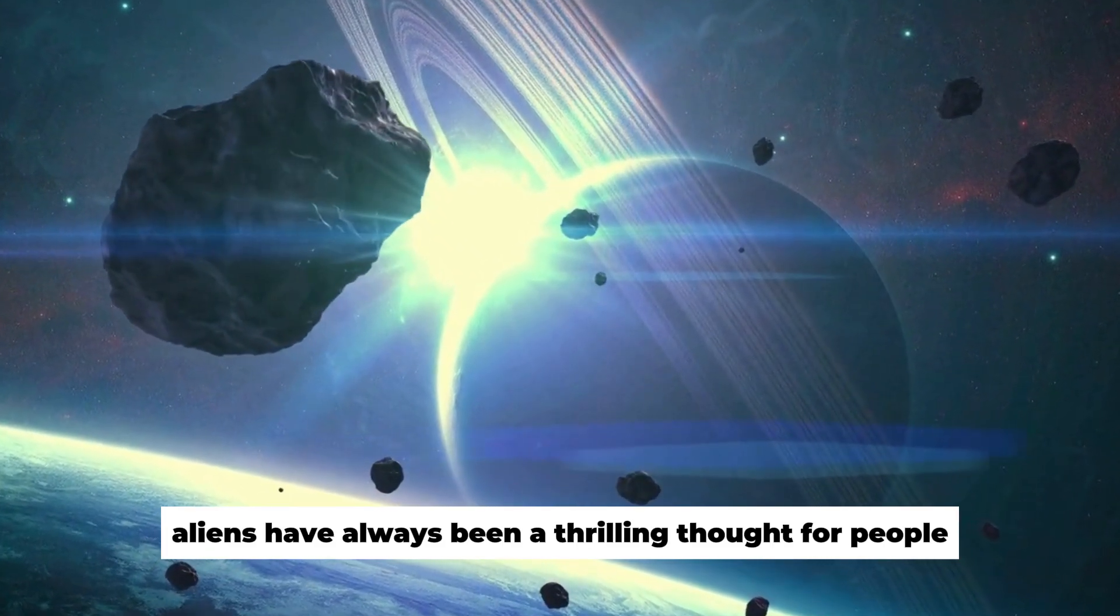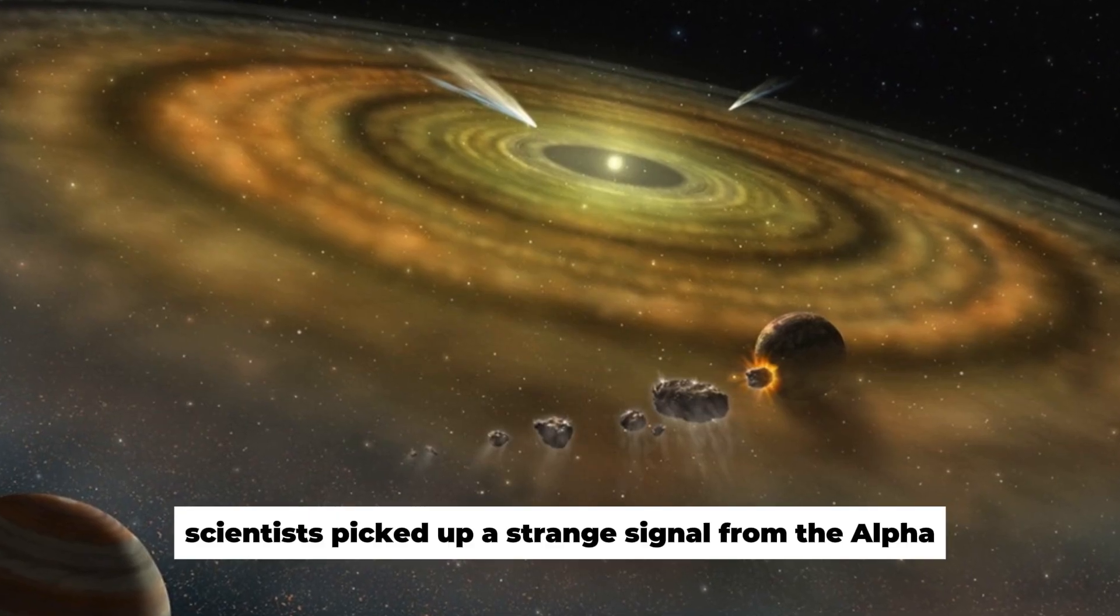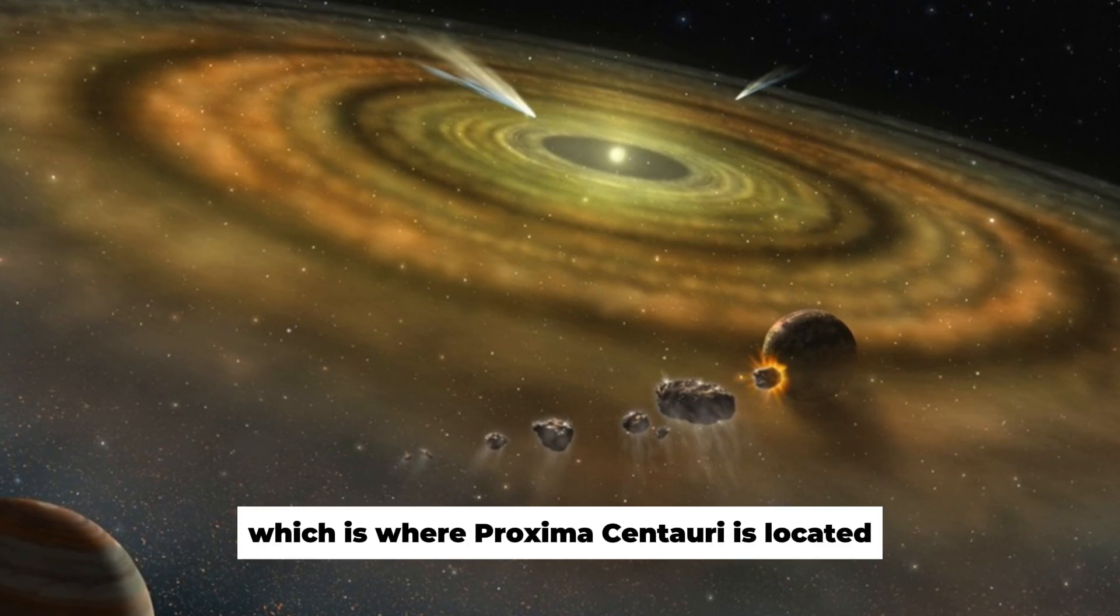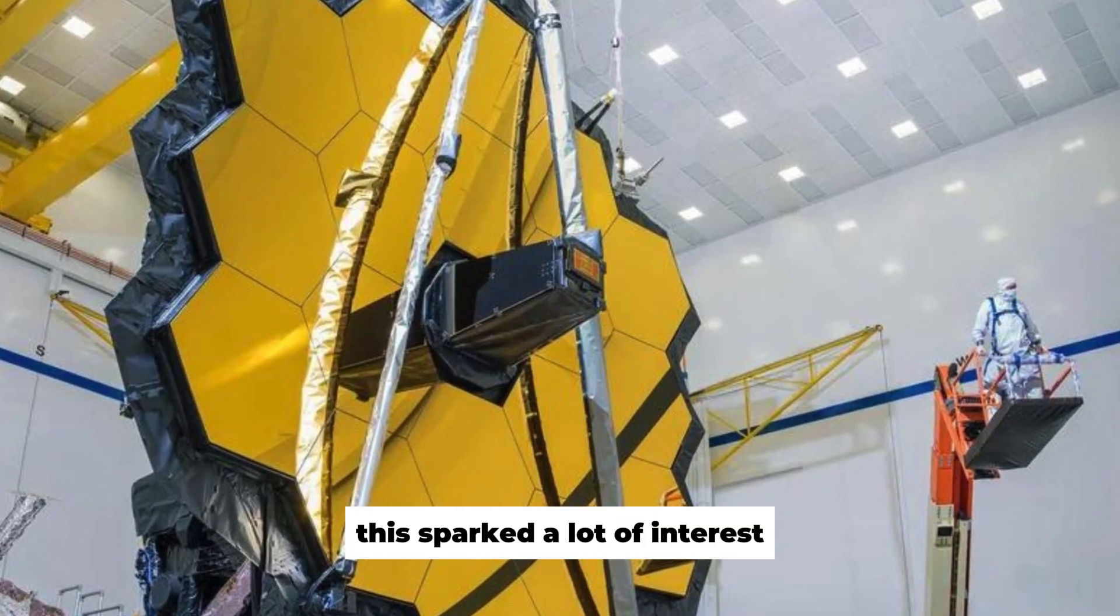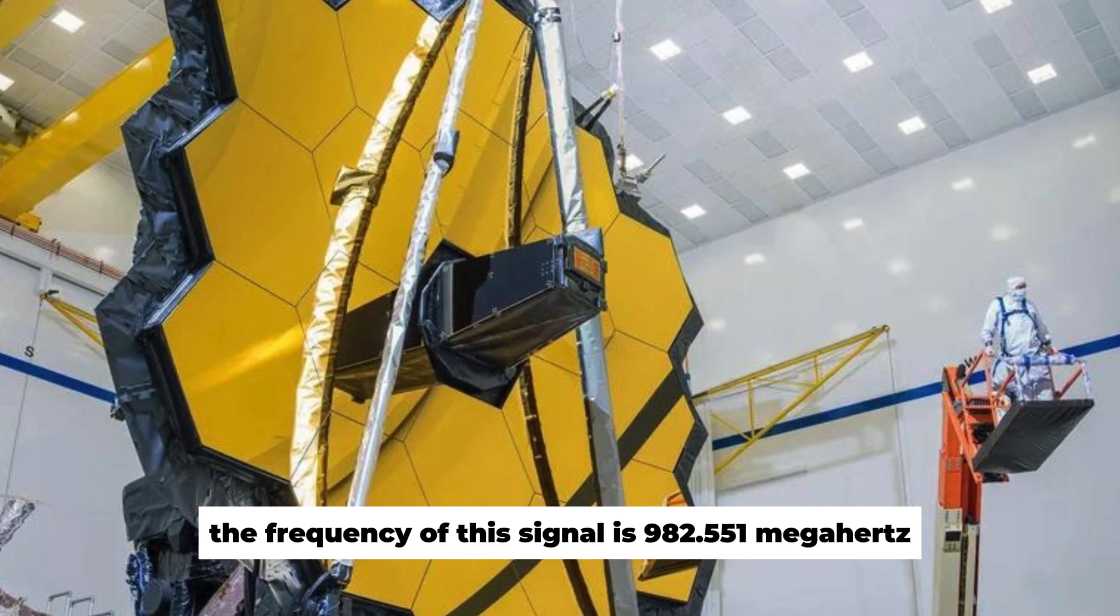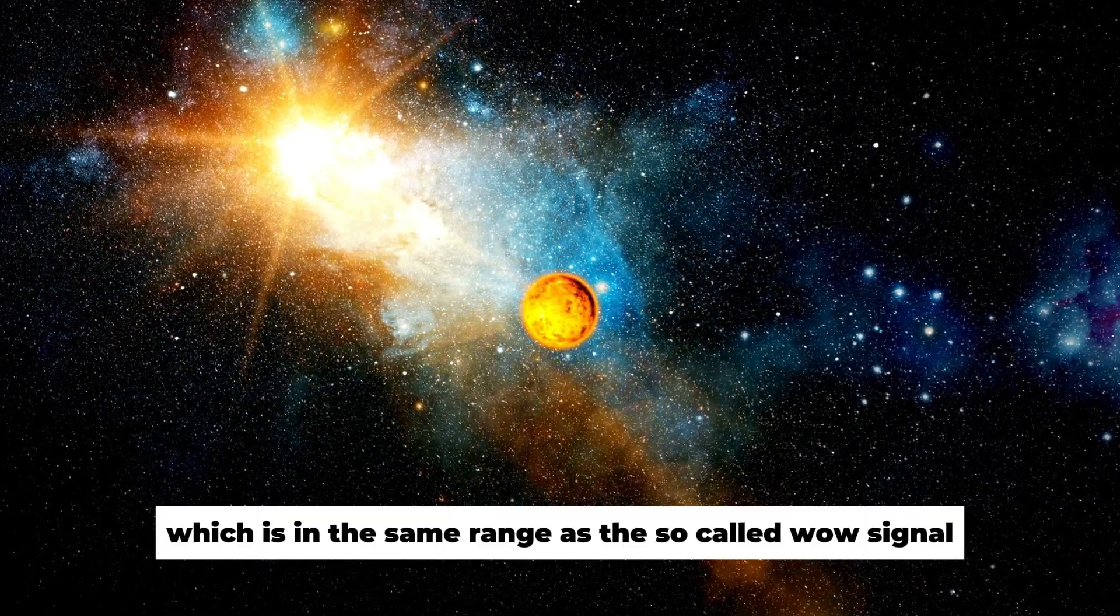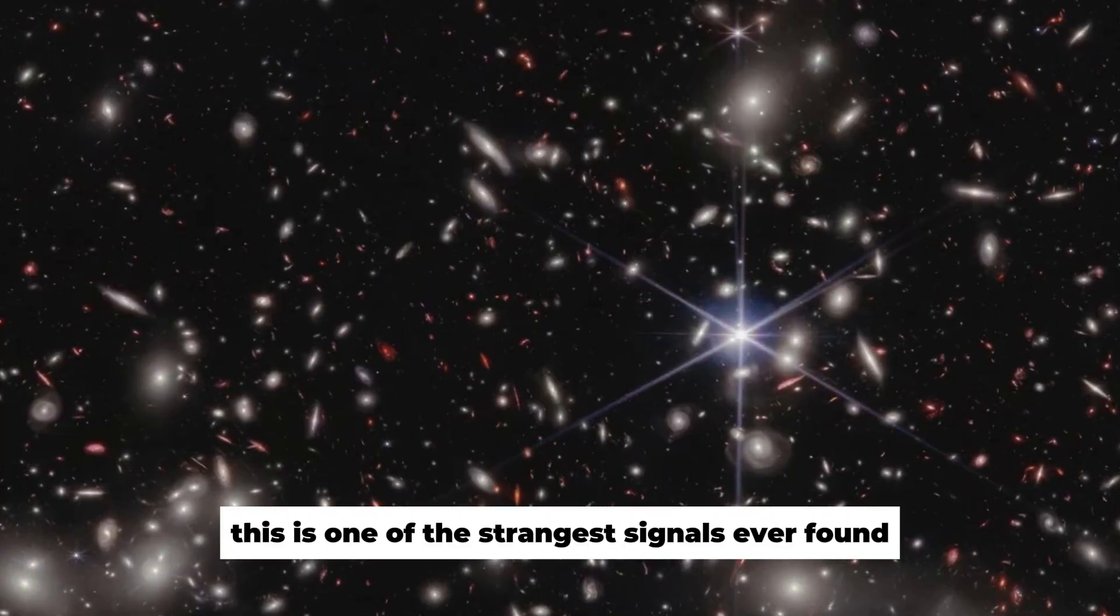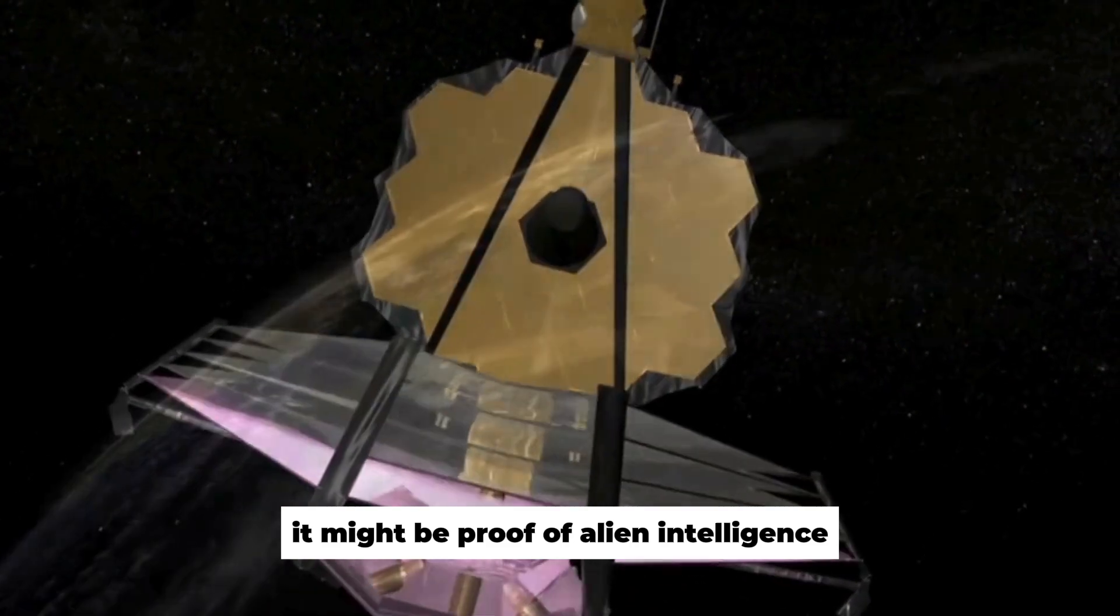Aliens have always been a thrilling thought for people. In late 2020, scientists picked up a strange signal from the Alpha Centauri system, which is where Proxima Centauri is located. This sparked a lot of interest. The frequency of this signal is 982.551 MHz, which is in the same range as the so-called WOW signal. This is one of the strangest signals ever found, and some people think it might be proof of alien intelligence.